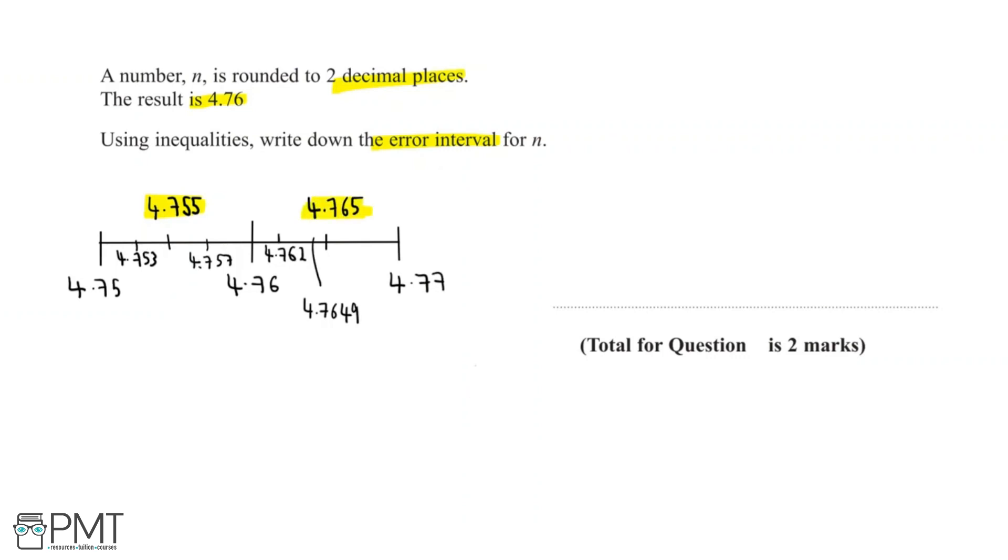And so we can represent this using an inequality. We've found that any number between 4.755 and 4.765 can round to two decimal places to 4.76. But this is including 4.755 and not including 4.765. So let's write this down as our answer.